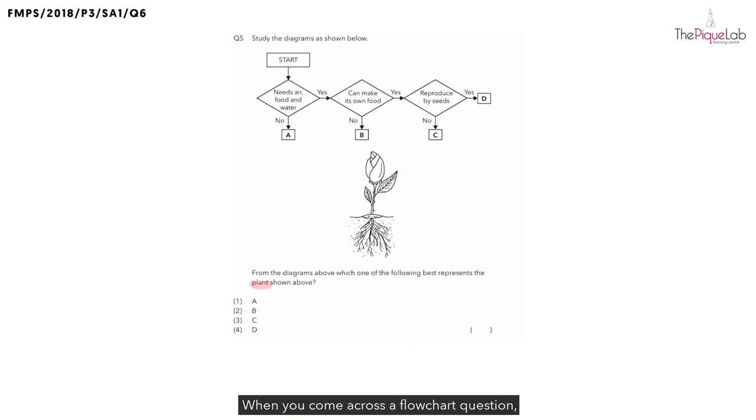When you come across a flowchart question and you would like to figure out which letter represents the organism, you can do so by tracing the flowchart. So what do I mean by tracing the flowchart? Let me show you how we can trace the flowchart. Where should we begin from? We should definitely begin from the start. So you can take your highlighter and start tracing from the start to the first question in the flowchart.